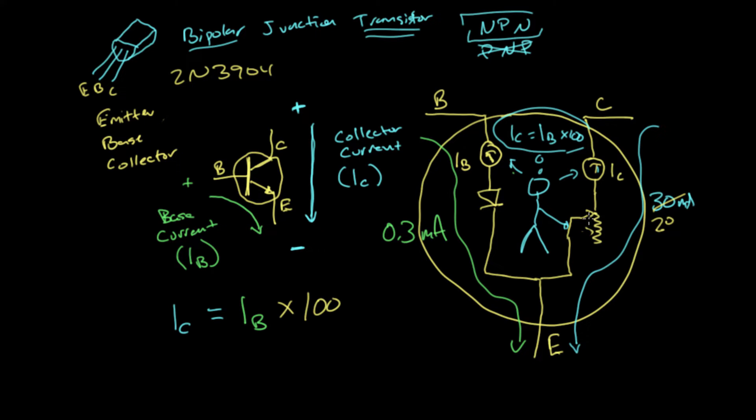And when that happens, there's kind of a word for this that you might see. It's called the transistor is saturated, or sometimes we'll say it's in saturation. So in saturation is when basically there's a short between the collector and the emitter.